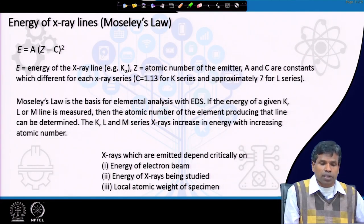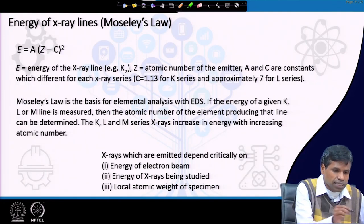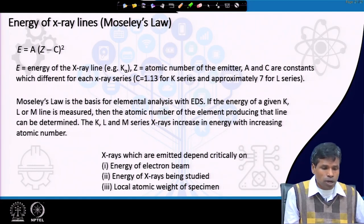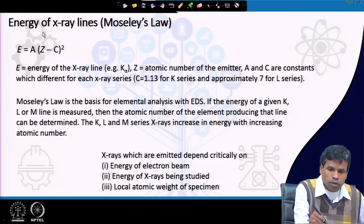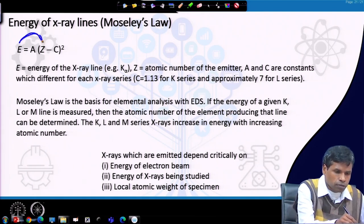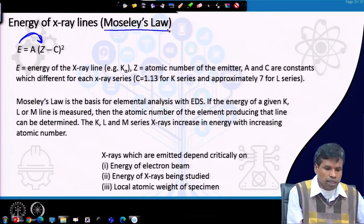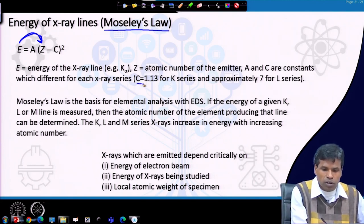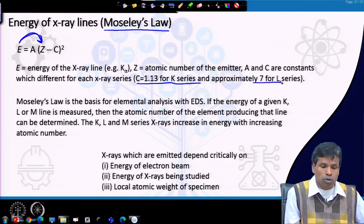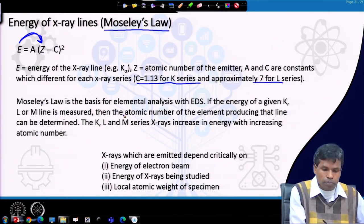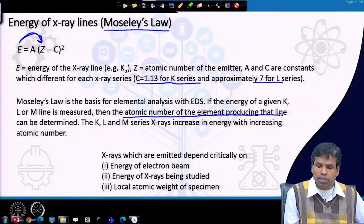The energy of the X-ray lines emitted depends particularly on the atomic number. The energy E of the X-rays coming out of the sample is directly proportional to atomic number Z — this is Moseley's law: E = A(Z - C)², where A and C are constants (C ≈ 1.134 for K series, approximately 7.4 for L series). Moseley's law is the basis for elemental analysis in energy dispersive spectroscopy. By measuring the energy of a given K, L, or M line, we can determine the atomic number of the element producing that X-ray line.